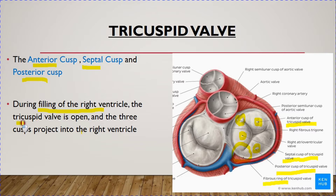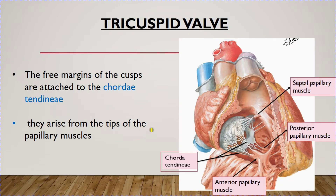During filling of the right ventricle, the tricuspid valve is open because blood enters the right ventricle from the right atrium — the gateway is open, and the three cusps project into the right ventricle. During ventricular relaxation or the filling period, the valve cusps are apart and blood can flow through the orifice guarded by the tricuspid valve.